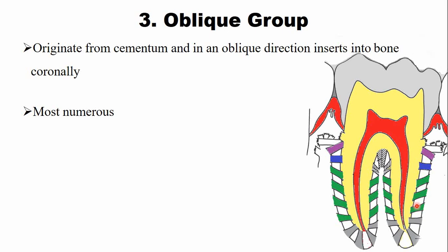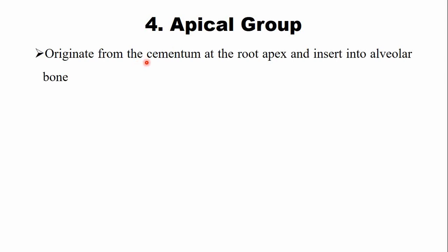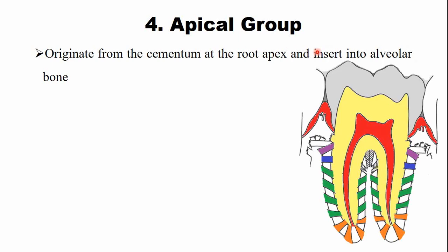The next group is the apical group. As the name suggests, these fibers are present at the apex of the tooth. They originate from the cementum at the root apex and insert into the alveolar bone at the base of the alveolar socket.